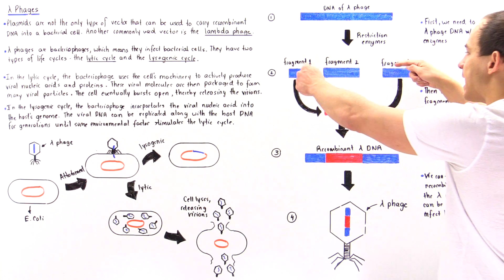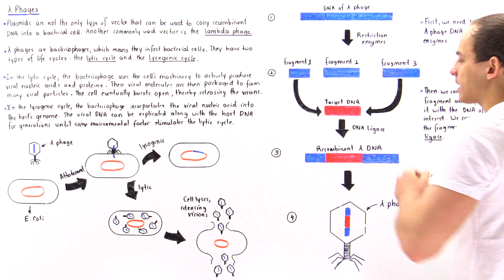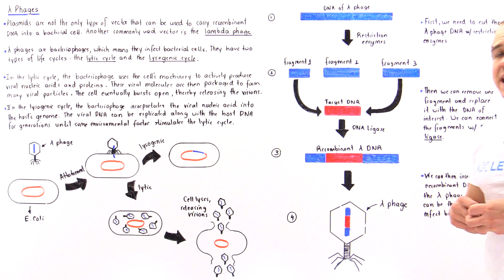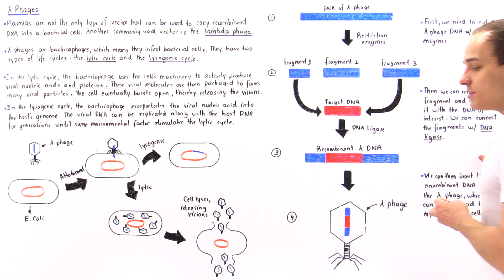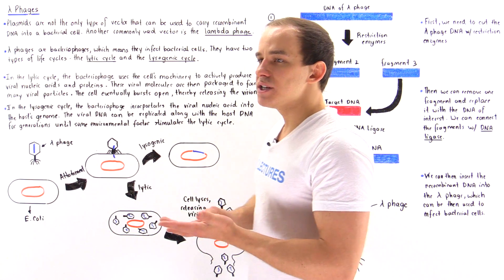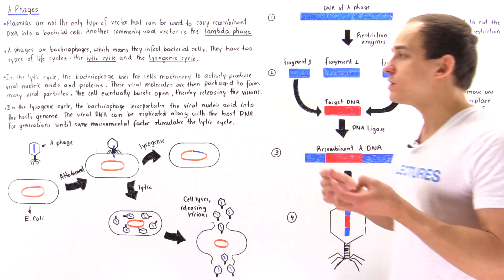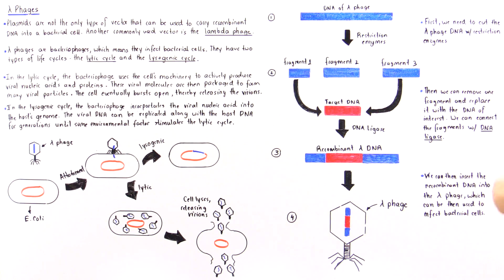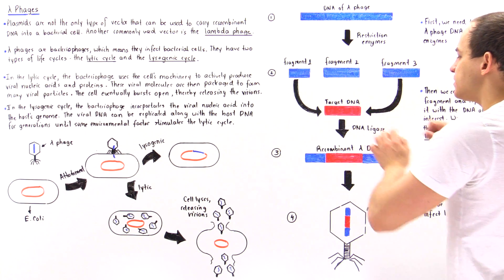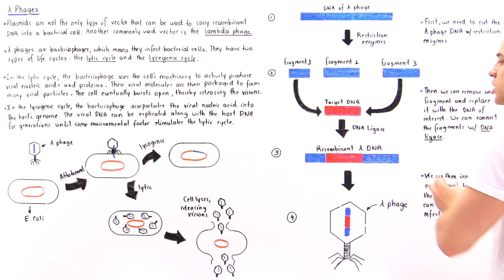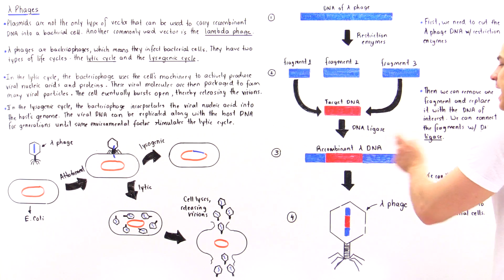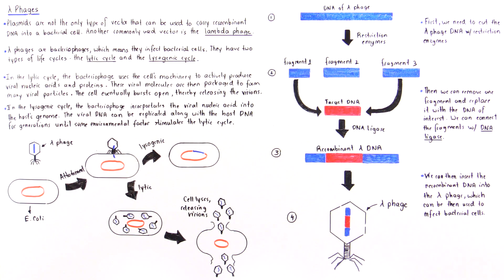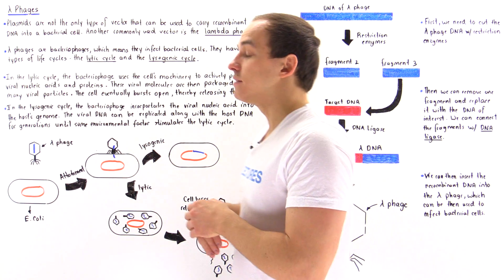To connect these three fragments, we use a special enzyme known as DNA ligase. DNA ligase uses ATP molecules to create phosphodiester bonds between the fragments. When we mix these three fragments with DNA ligase, we produce recombinant lambda DNA that is about the same size as the original DNA molecule from the lambda phage.